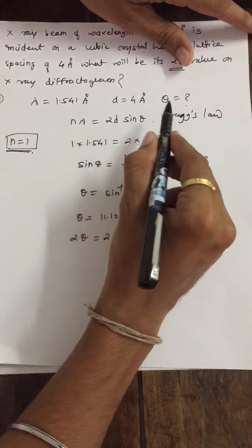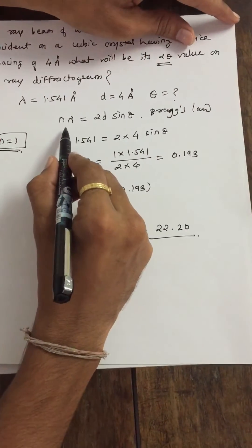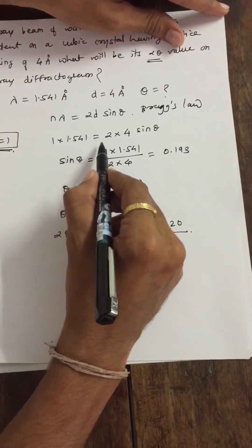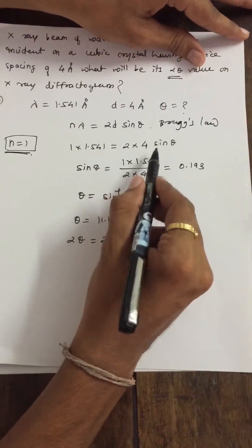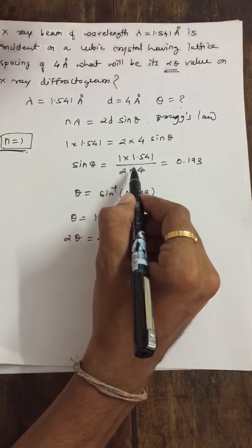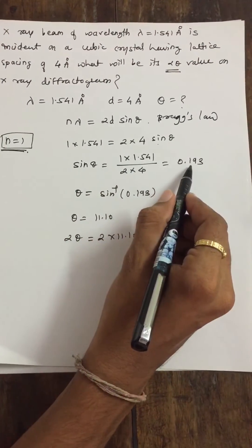So, after substituting the values in Bragg's law, we get 1 times 1.541 equals 2 times 4 sin theta. Then keep sin theta here, shift. After shifting and calculating we get 0.193.